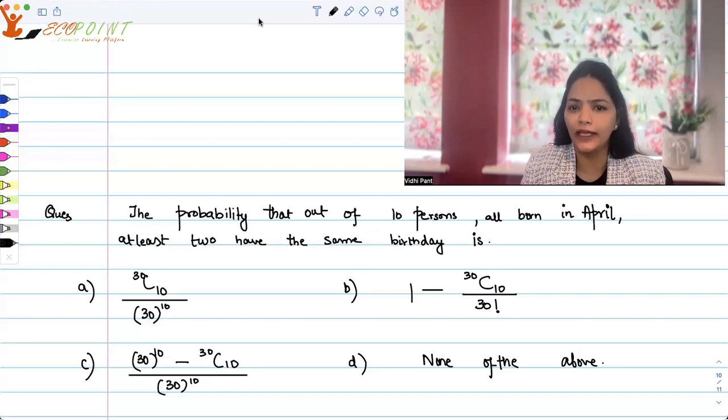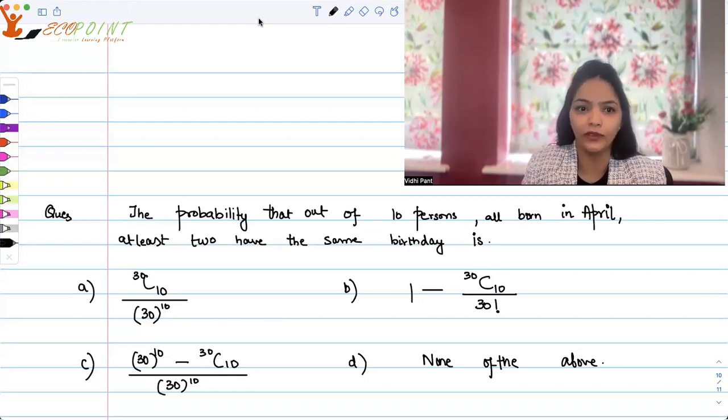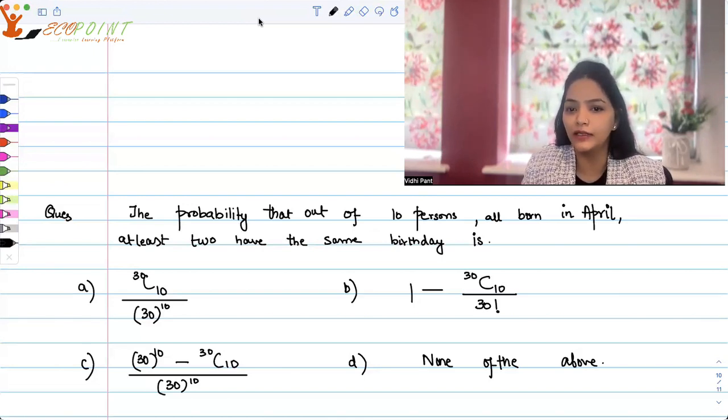The probability that out of 10 persons all born in April, at least two have the same birthday is 30C10 upon 30 to the power 10. Is it 1 minus 30C10 upon 30 factorial? Is it 30 to the power 10 minus 30C10 upon 30 to the power 10 or none of the above?